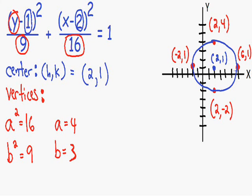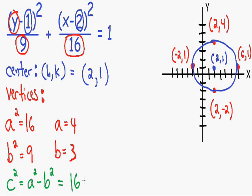The last thing we need to do is plot our foci. The quantity we use to find the distance from the center to the foci is c squared. We have a formula: c squared equals a squared minus b squared. A way to remember this is: c squared equals the bigger number minus the smaller number. So c squared equals 16 minus 9, which equals 7.